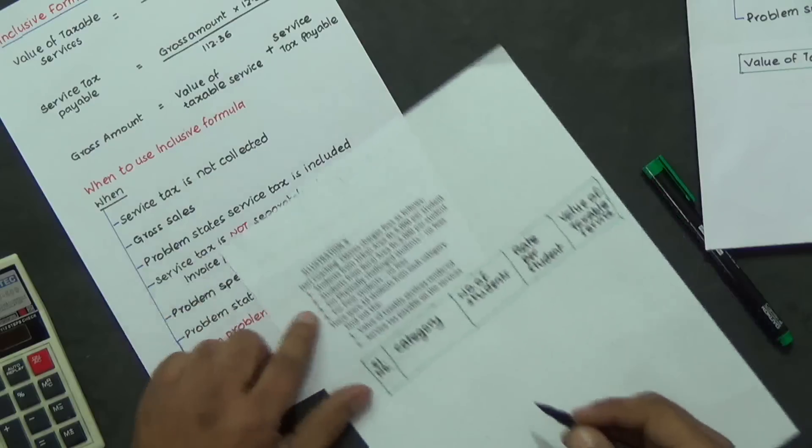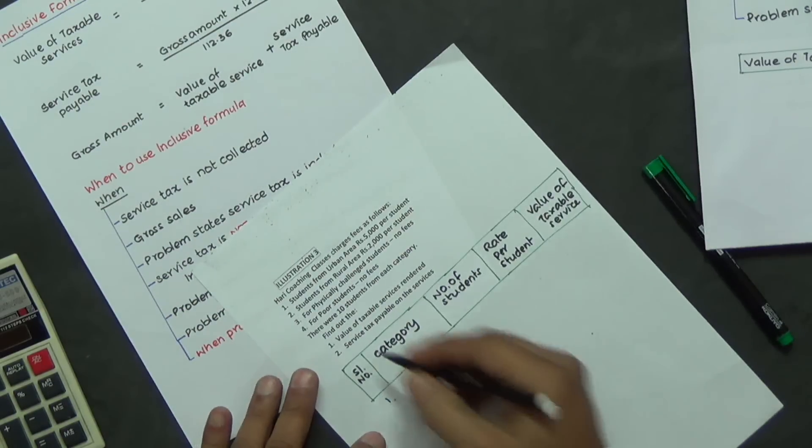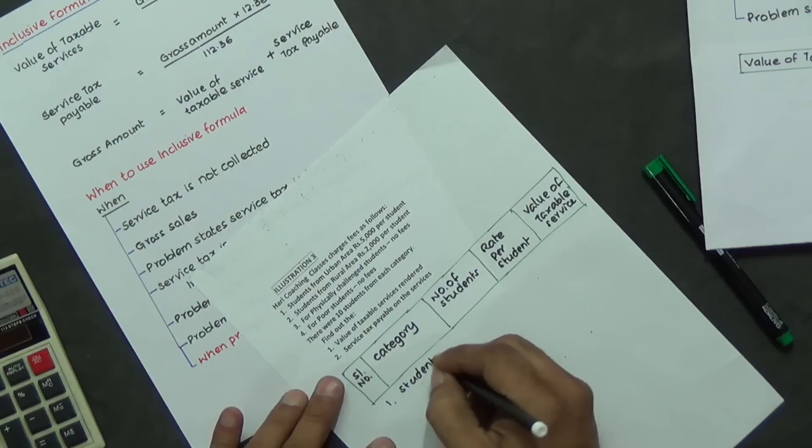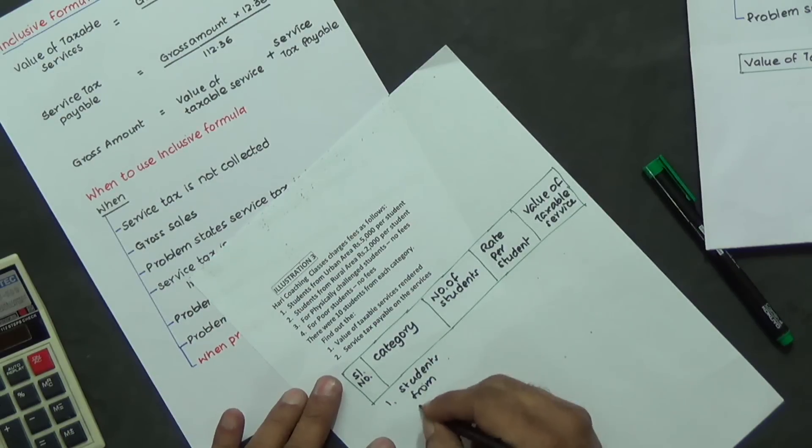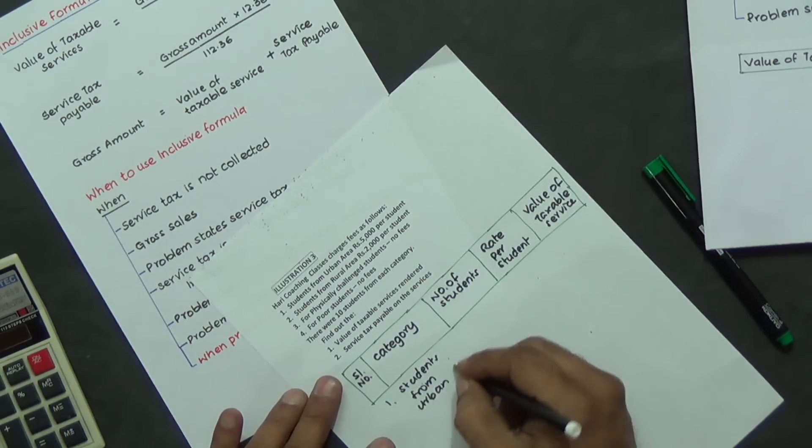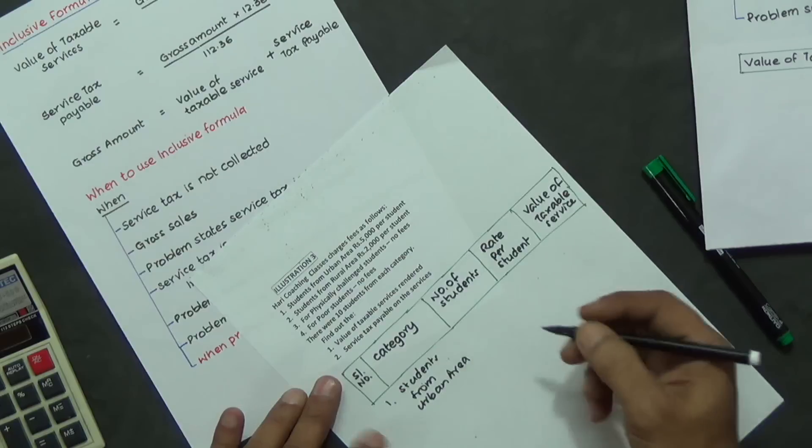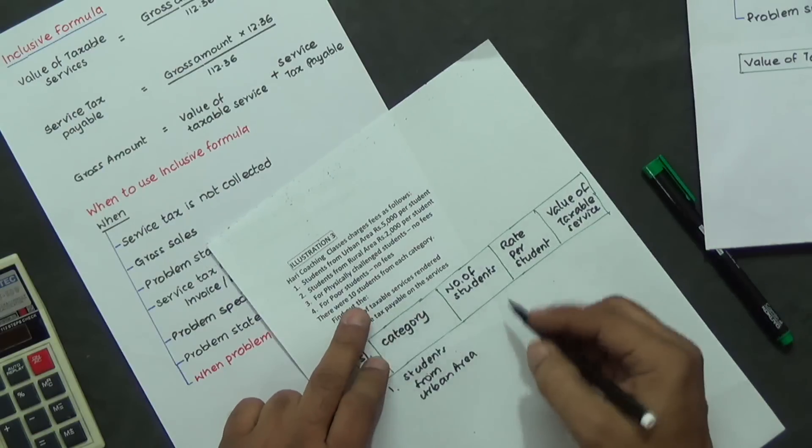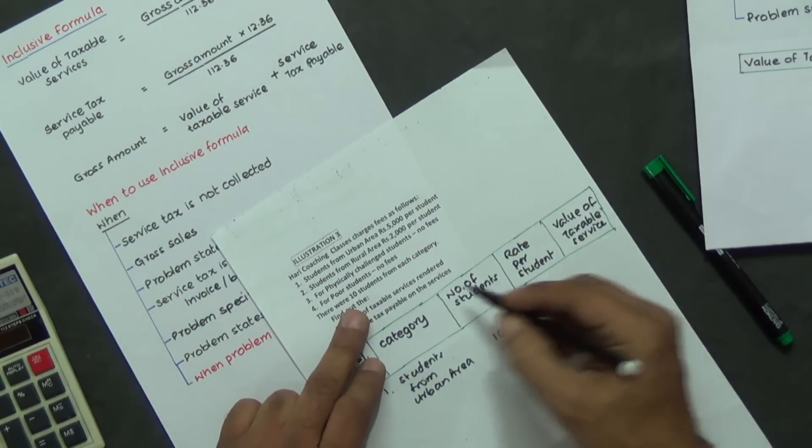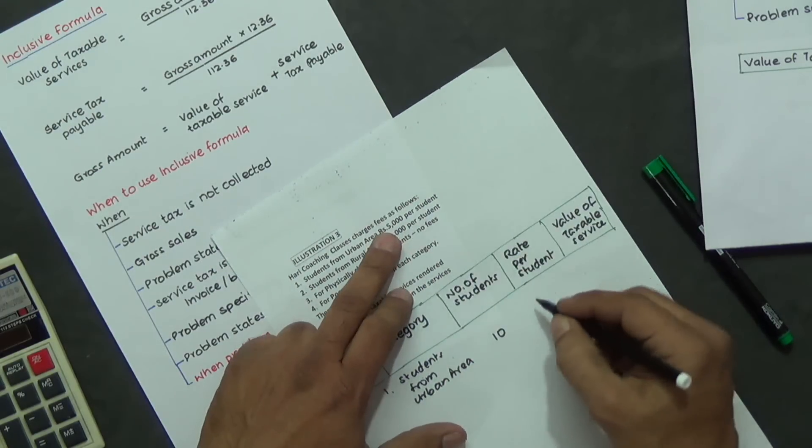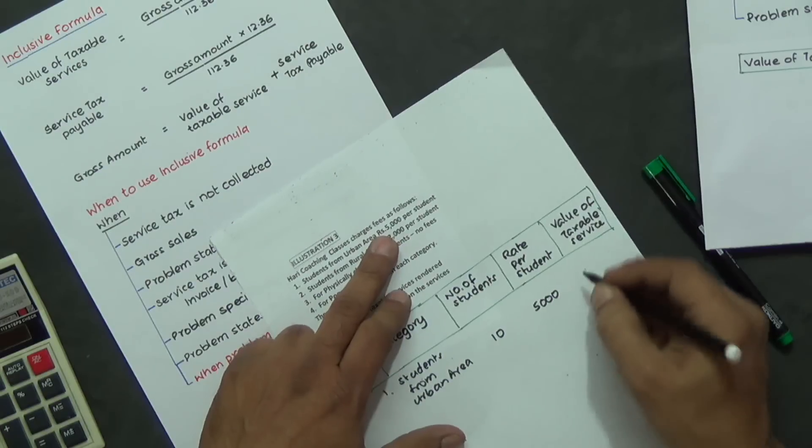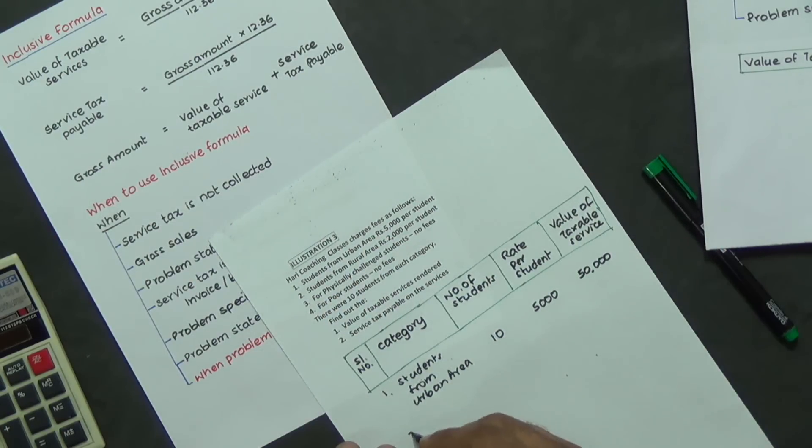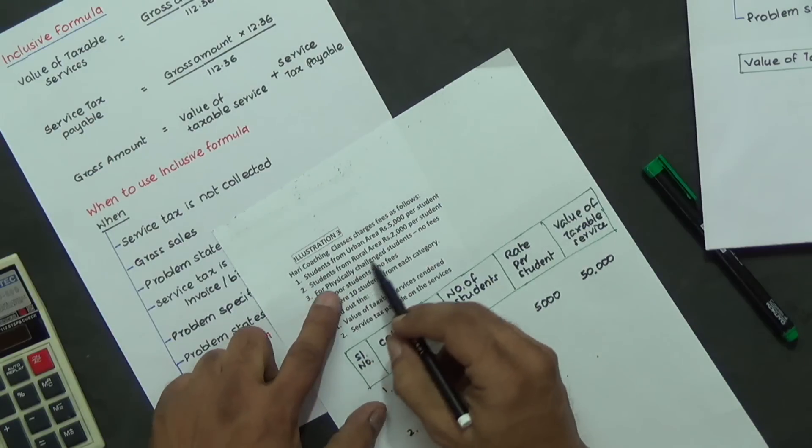Number of students from each category: 10 students. Rate per student is 5,000. 10 into 5,000 equals 50,000. Second category, students from rural area.